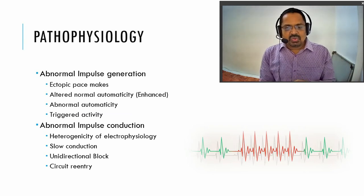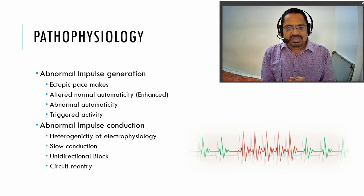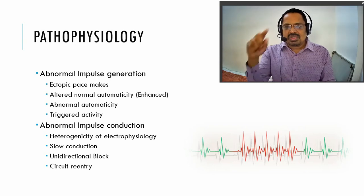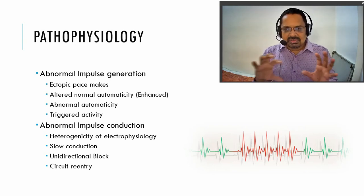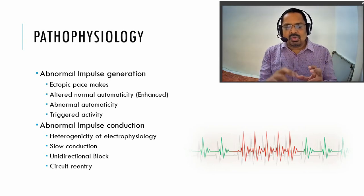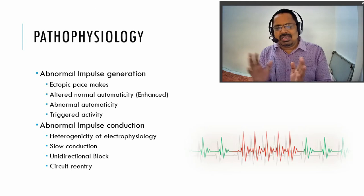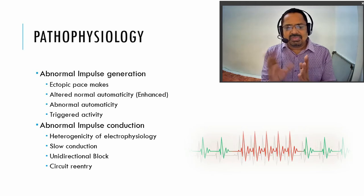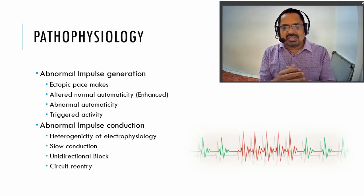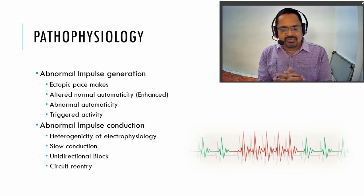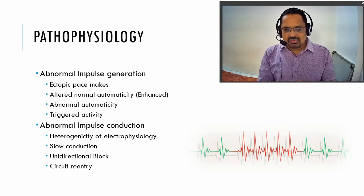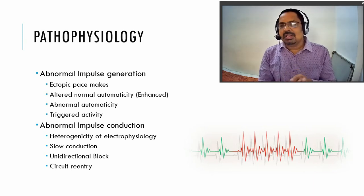For abnormal impulse conduction, there are different types. The electrophysiology has perfectly defined phases — zero, one, two, three — but there is heterogeneity in those phases. This heterogeneity in electrophysiology leads to slow conduction, unidirectional block, and circuit re-entry, which I will explain with figures.